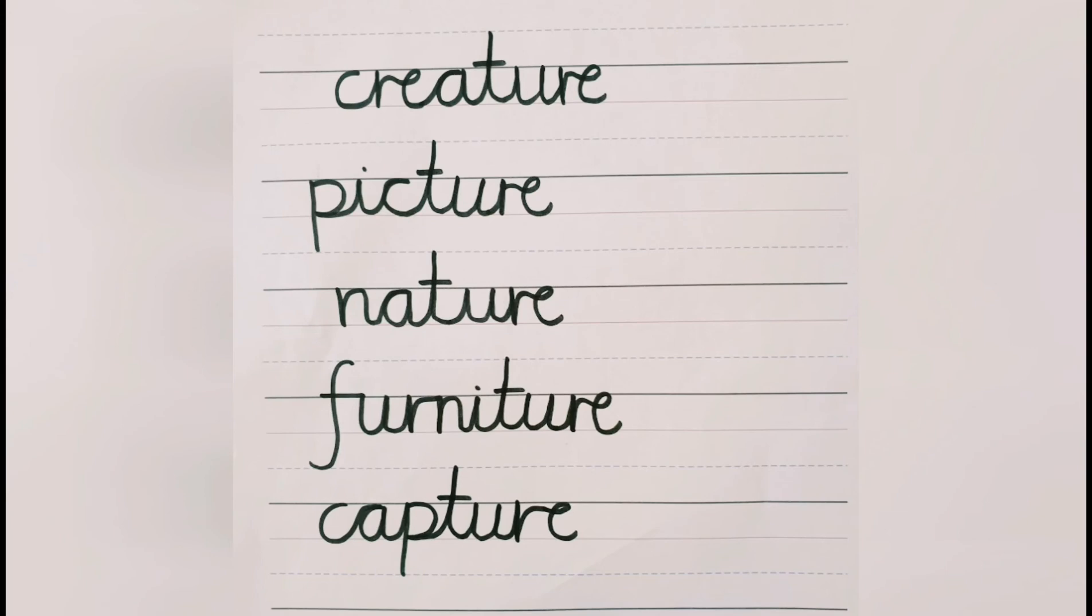So here are the five spellings for today. Creature, picture, nature, furniture, capture. Remember to practice all five spellings lots and we'll be back on Thursday with the next five spellings. Bye.